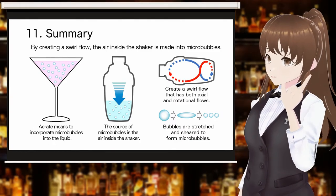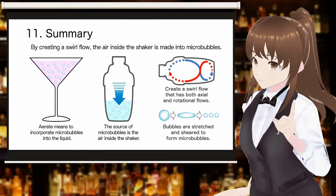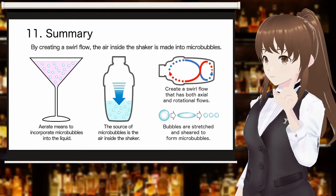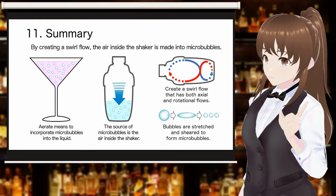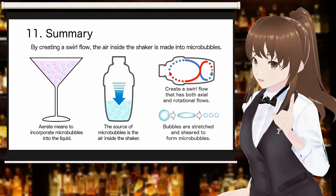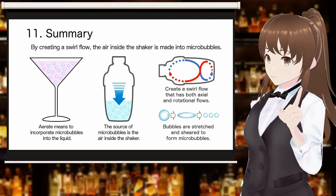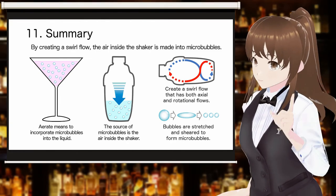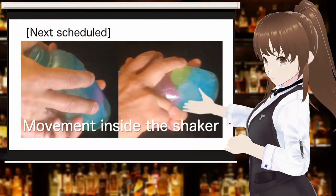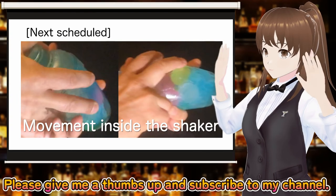In this video, we explained the principle of aerate — that aerate means taking microbubbles into a liquid. We also explained that the air generating the microbubbles is the air sealed inside the shaker, and that in order to turn it into microbubbles, it is necessary to generate a swirl flow by shaking, shear the bubbles by the swirl flow, and divide them into fine bubbles. The next video will show the movement inside the shaker, illustrated with experiments using transparent shakers and slow motion photography. Please subscribe to the channel to watch.